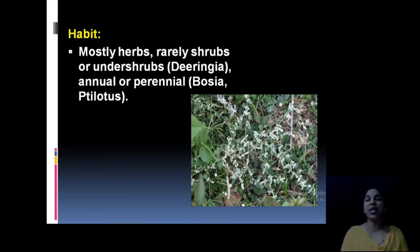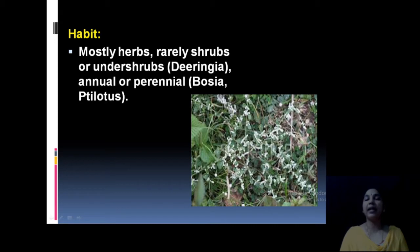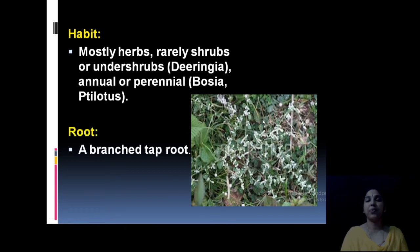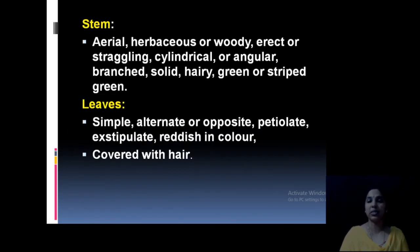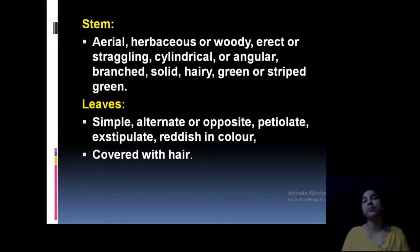A very common plant belonging to Amaranthaceae is Aerva lanata — known as 'chirula' in Malayalam. This plant is common in our fields and is highly medicinal. Regarding roots, they have a tap root system. The stem is usually herbaceous.